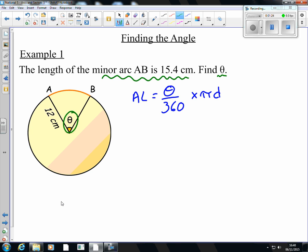Same as in volume, we need to substitute in what we know. We're told in the question that arc length is 15.4. So we substitute that in for there. We don't know what the angle is, so that's just going to stay as theta.